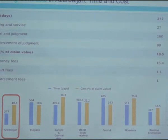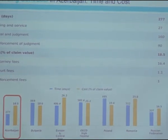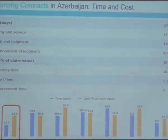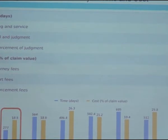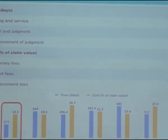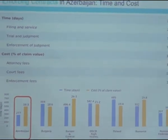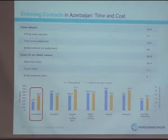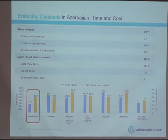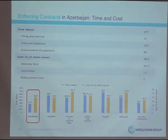Looking more closely at time and cost in Azerbaijan: the total time is 277 days — 27 days for filing and service, 160 days for trial and judgment, and 90 days for enforcement. The total cost is 18.5% of the claim value: 16.4% for attorney fees, 1.1% for court fees, and 1% for enforcement fees. Azerbaijan's performance on time and cost is also compared to other economies in the region and the median score for Europe and Central Asia.